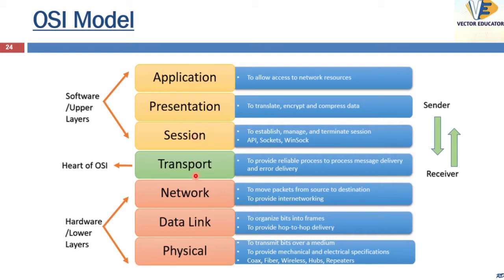The transport layer ensures data delivery is error free, in sequence, and without any loss or duplication. The network layer provides routing paths for network communication — data is transferred via logical network paths. The data link layer manages traffic over the physical medium of transmission and moves data packets from the NIC (network interface card) of devices to the transmission channel. The physical layer, layer one, is responsible for the transmission of raw bits of data over the physical medium such as cables.